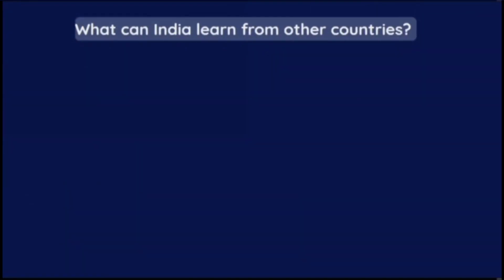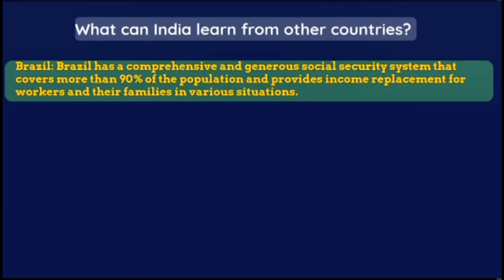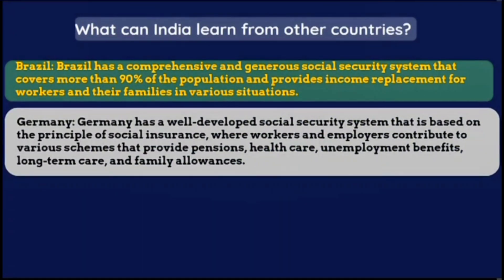What can India learn from other countries? Brazil has a comprehensive and generous social security system that covers more than 90% of the population and provides income replacement for workers and their families in various situations. India can learn from Brazil's experience in expanding coverage and implementing reforms to ensure fiscal sustainability and efficiency. Germany has a well-developed social security system based on the principle of social insurance, where workers and employers contribute to various schemes providing pensions, health care, unemployment benefits, long-term care, and family allowances. India can learn from Germany's model, which is widely accepted and trusted by the public and provides adequate protection and incentives for workers.